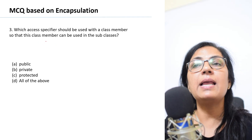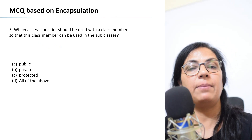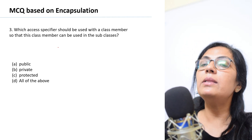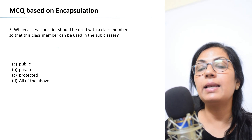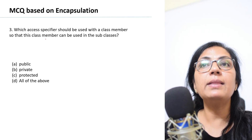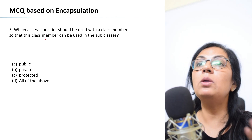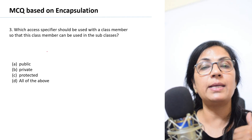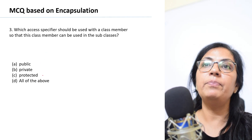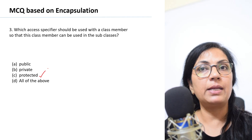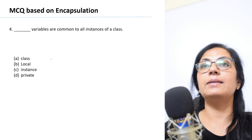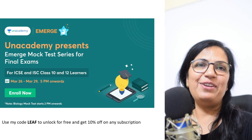Question number three: Which access specifier should be used with a class member so that this class member can be used in the subclasses? The classes which acquire the properties of another class are known as subclasses. If you want a class member to be used in the subclasses, which access specifier do you use — public, private, protected, or all of the above? The correct answer is protected, option C.